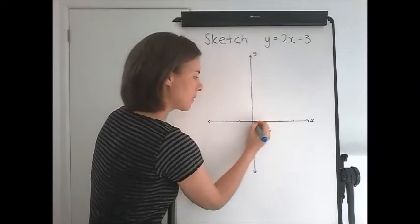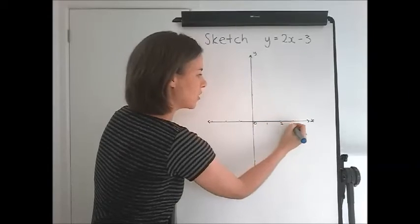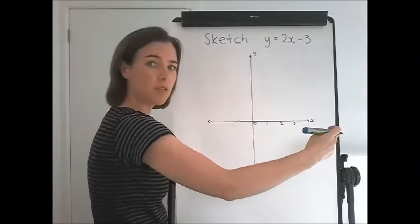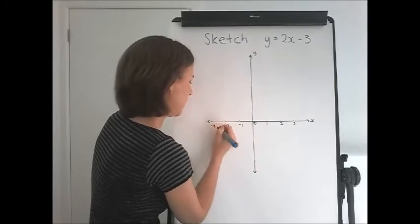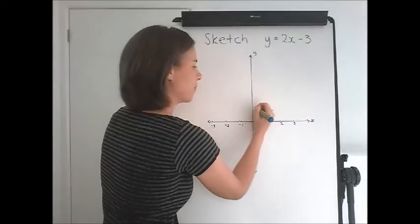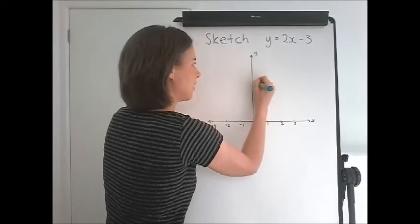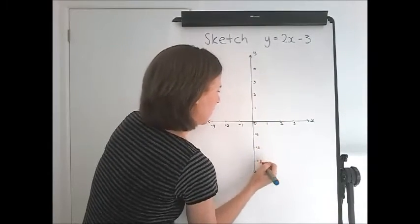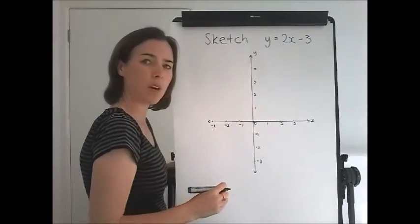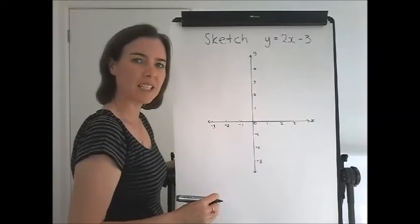Now label the numbers. 0, 1, 2, 3. Positive to the right. Negative 1, negative 2, negative 3. Negative to the left. 1, 2, 3, 4. Negative 1, 2, 3. So positive going up on the y-axis and negative going down.